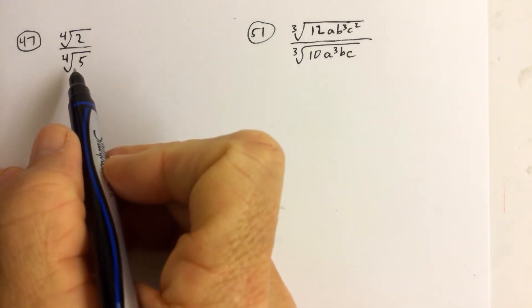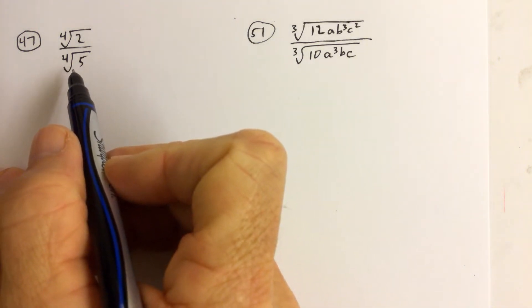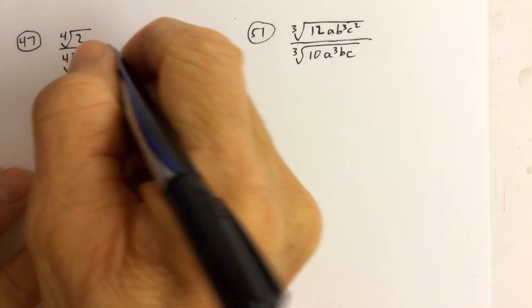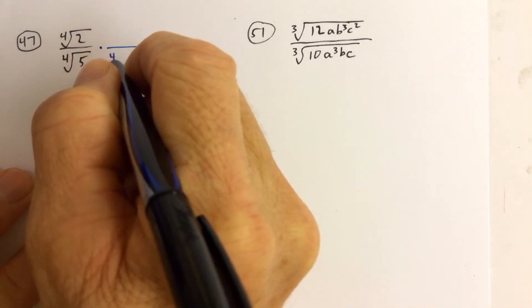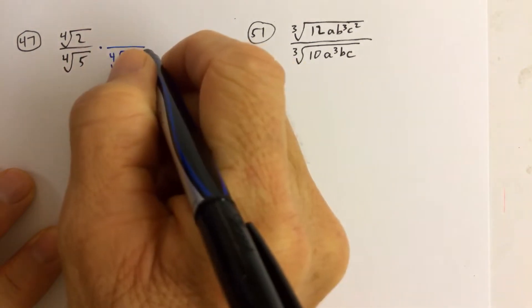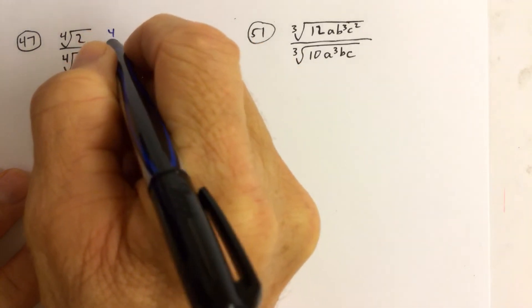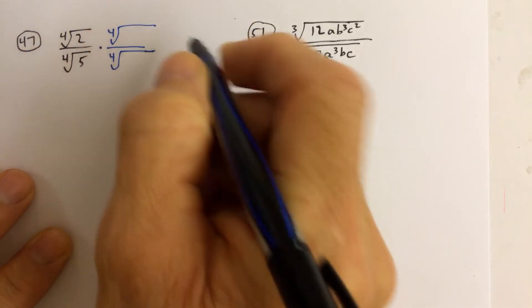Now, in this problem, similar to problem number 43, we have to rationalize the denominator, but if we just apply blindly the same rule that we applied in the last problem,